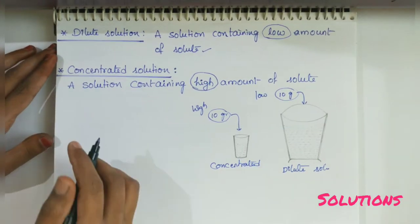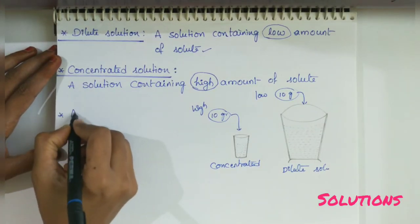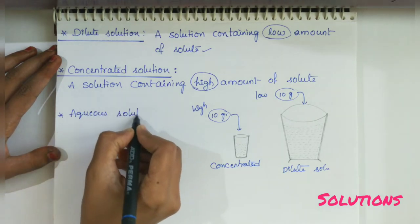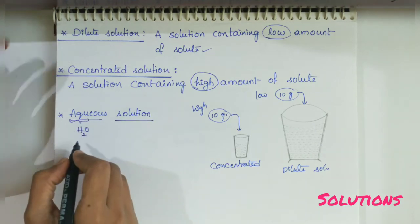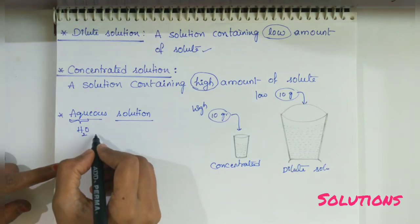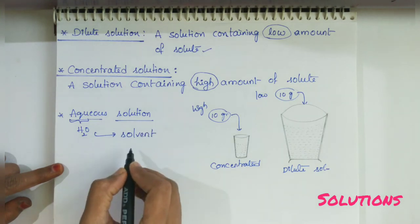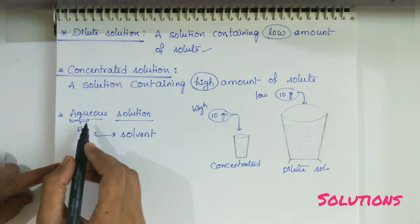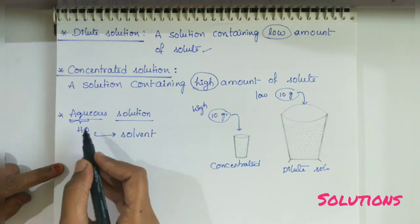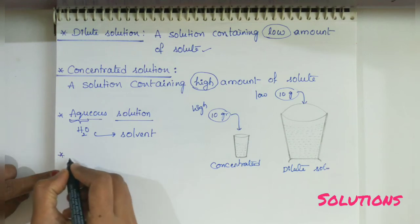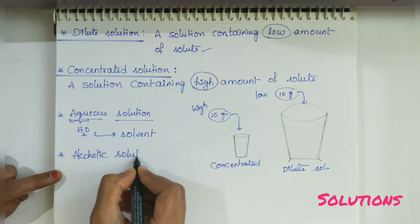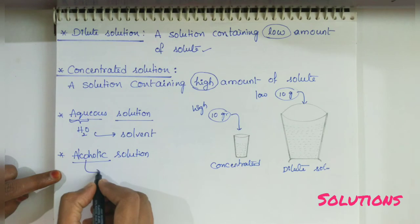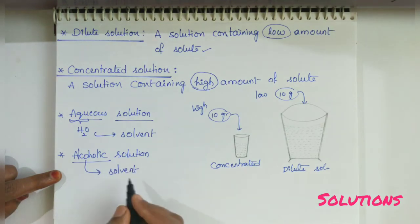Next, aqueous solutions and alcoholic solutions. What is meant by aqueous solution? The word 'aqueous' indicates water. That means, a solution containing water as a solvent is called an aqueous solution. Another one, alcoholic solution: here alcohol is taken as solvent. That means, a solution containing alcohol as a solvent is called an alcoholic solution.